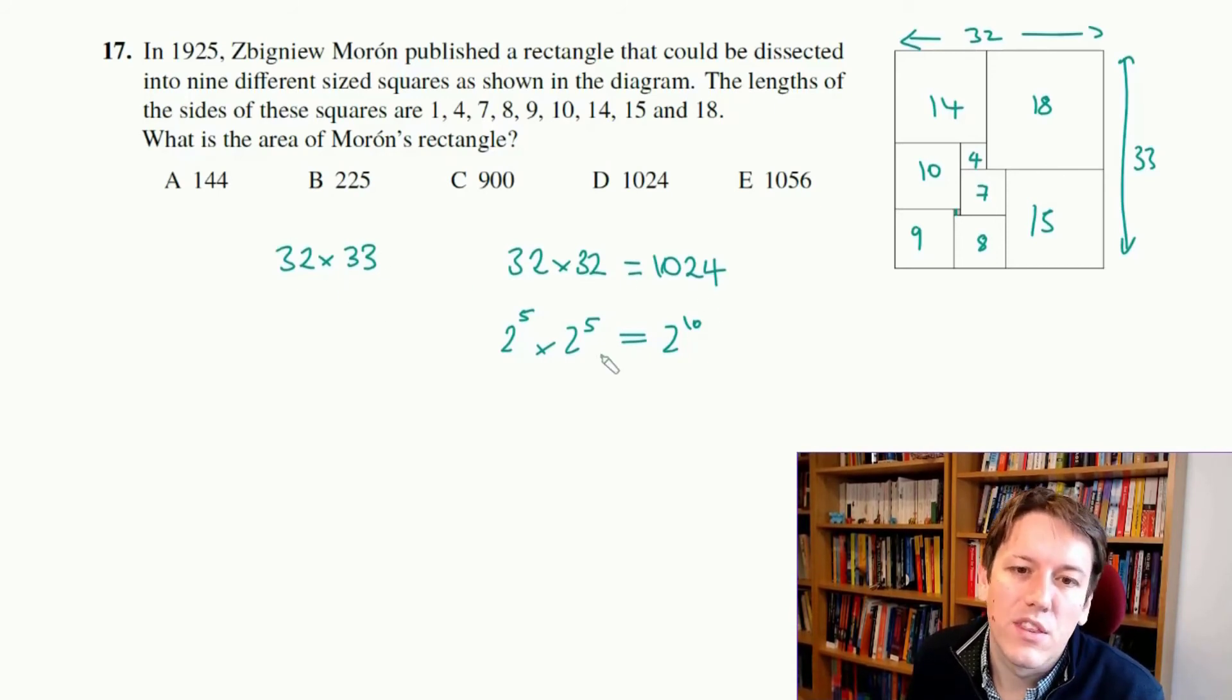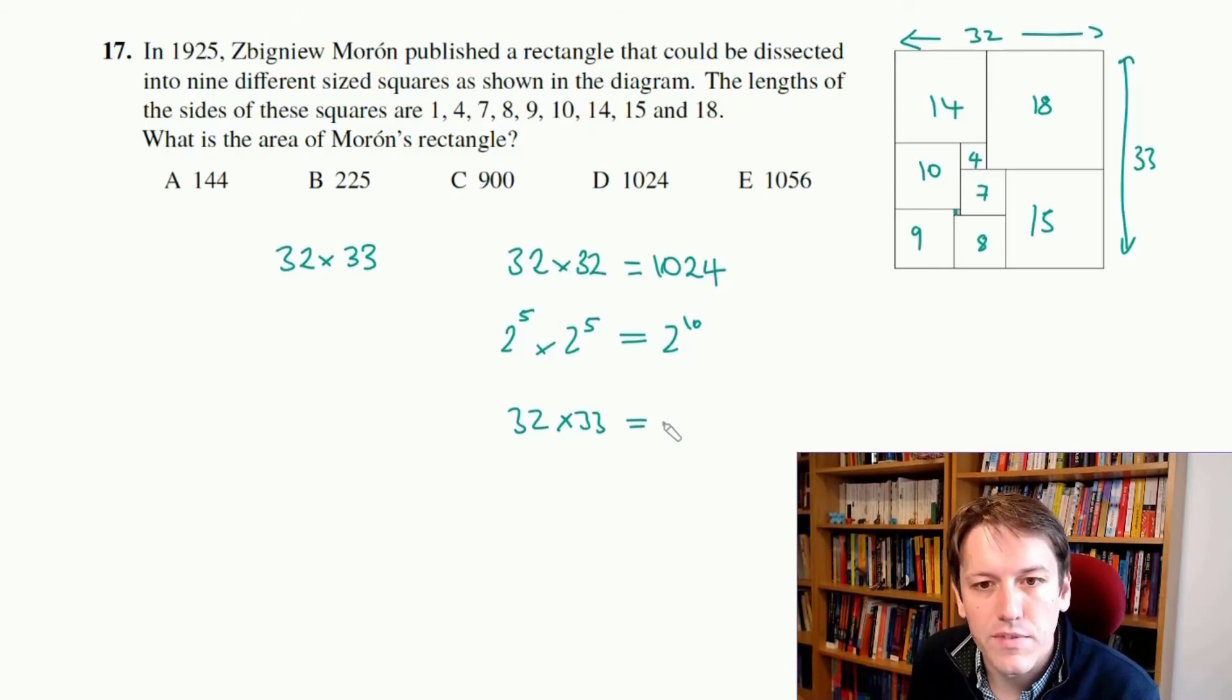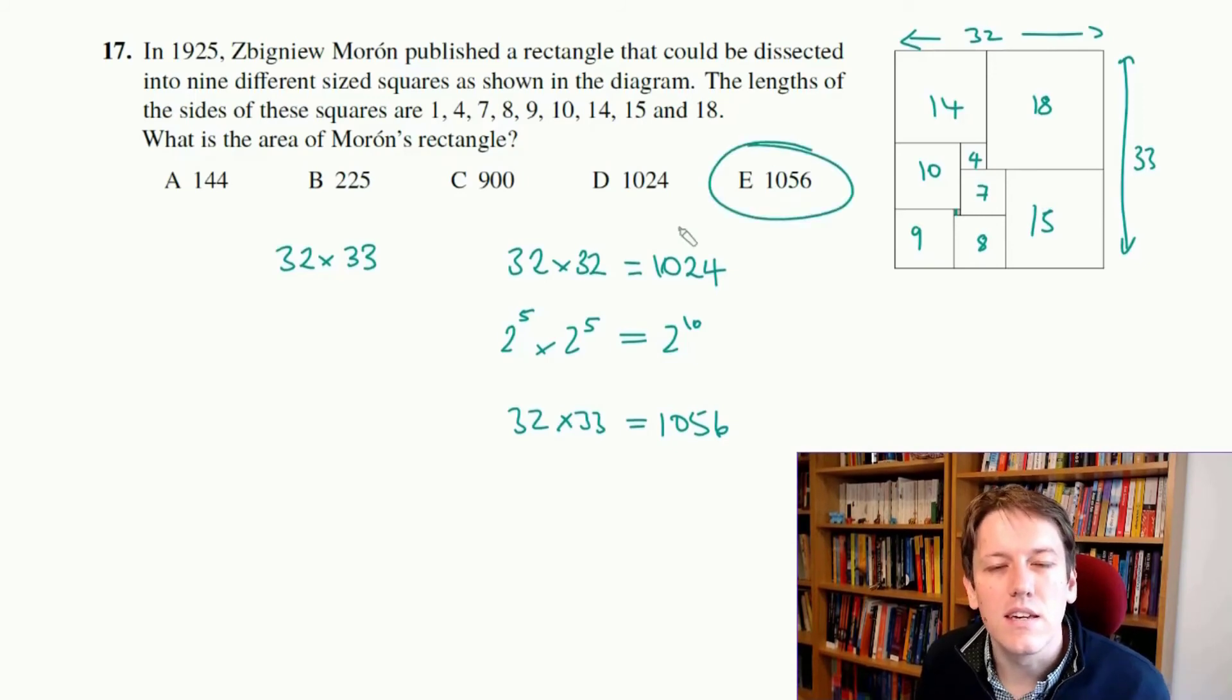And we actually want 32 times 33, so that's going to be another 32 on top of this, so that's 1056, but you know, do the multiplication however you want, obviously. Either way, the answer is E, 1056.